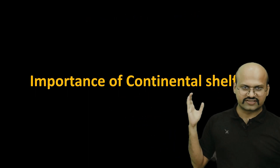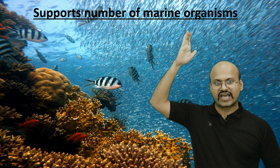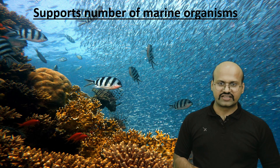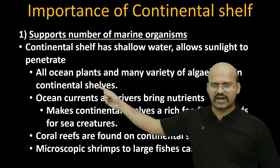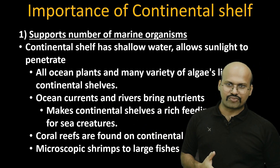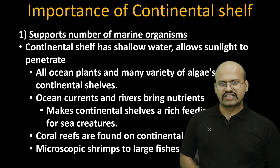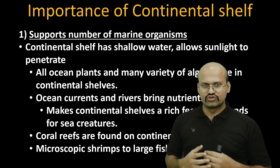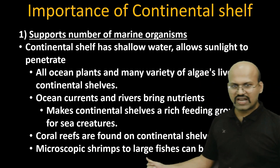The continental shelf is the most useful part of all oceanic structures. It supports a large number of marine organisms because sunlight penetrates these shallow regions, enabling coral reefs, plants, and diverse marine life. All ocean plants and many varieties of algae live in the continental shelf. Ocean currents and rivers bring nutrients, promoting the growth of phytoplankton and providing abundant feeding grounds for zooplankton and larger animals. Coral reefs are also found here, and we can find organisms from microscopic to large fishes.